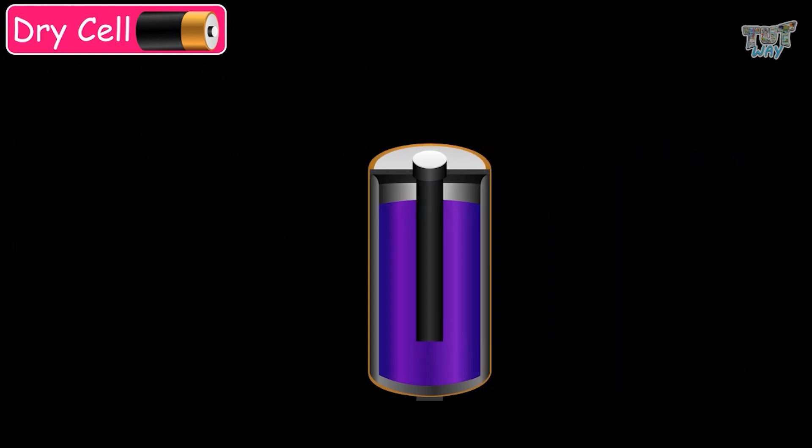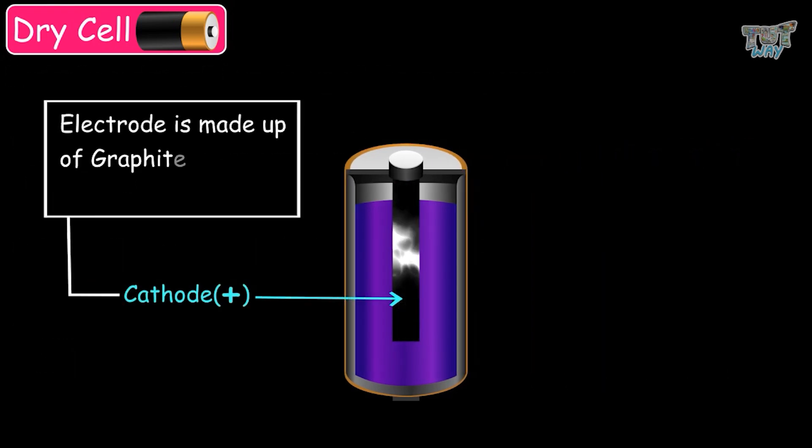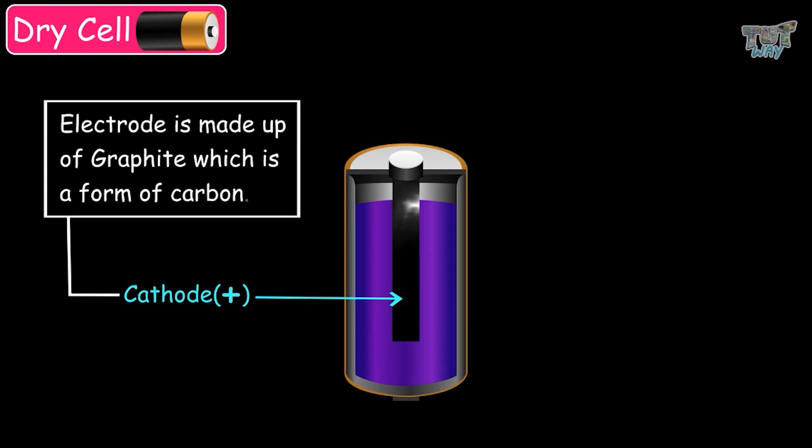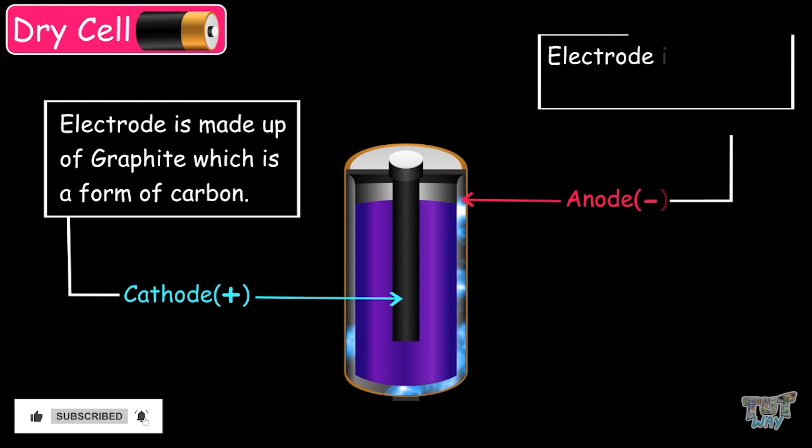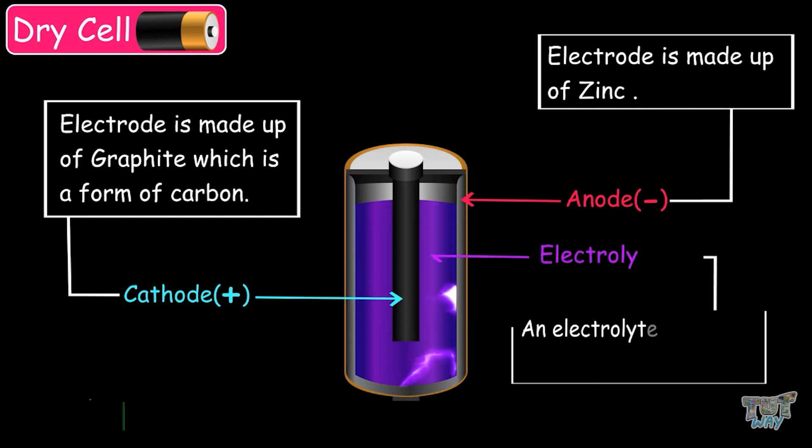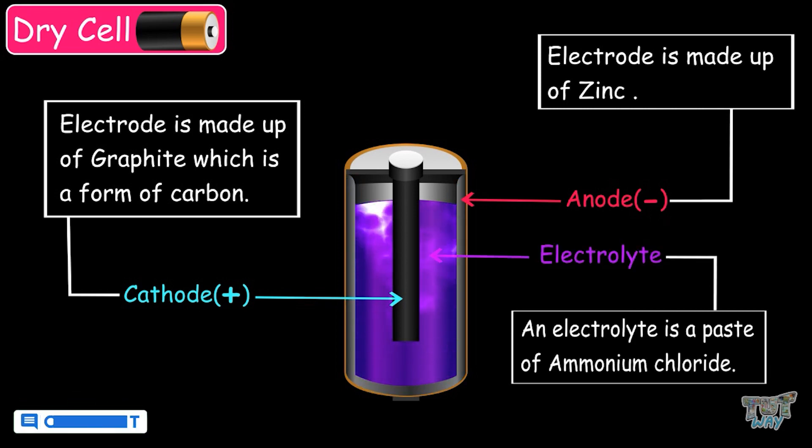The cathode, which is positively charged, is made up of graphite, which is a form of carbon. The anode, which is negatively charged, is made up of zinc. And the electrolyte is actually a paste of ammonium chloride.